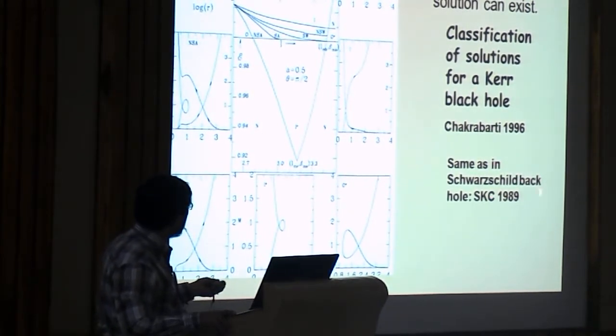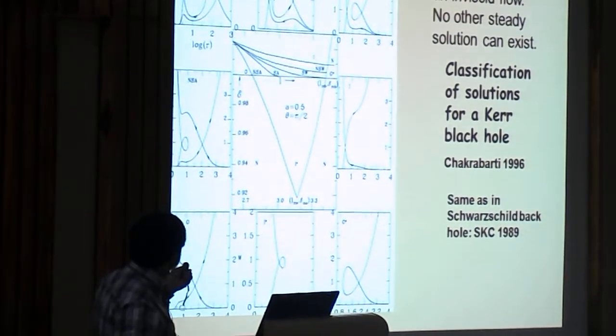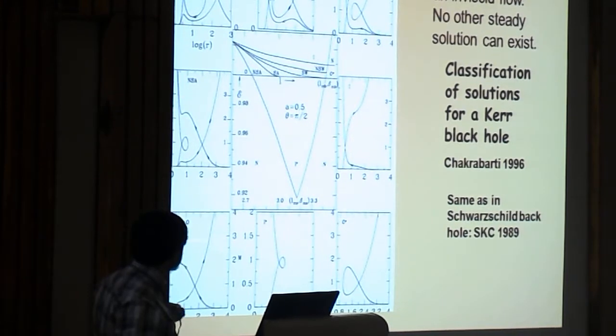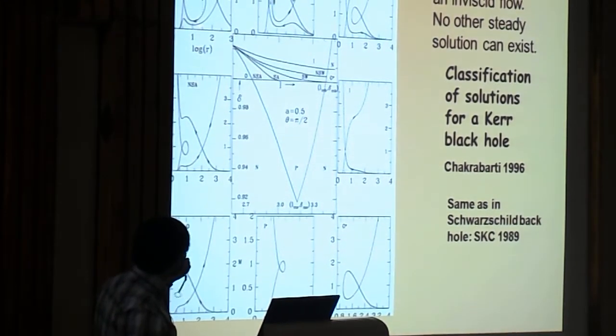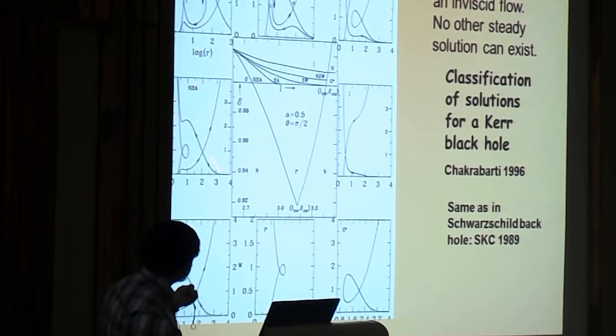Now first of course, we solved it in 89, and then we generalize to Kerr geometry, and we found that this is the entire parameter space, and different region of the parameter space produces different solutions. For very low energy and low angular momentum, it is like a Bondi flow, but as you increase the angular momentum little by little, you find that there is a topology here, which does not allow a shock formation. It just goes like this, but there is no, like the Rankine condition is not satisfied.